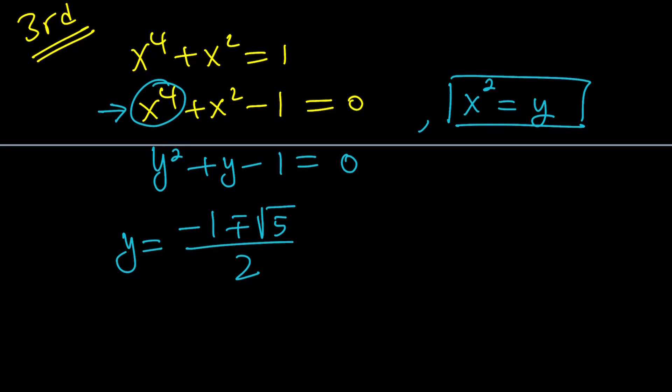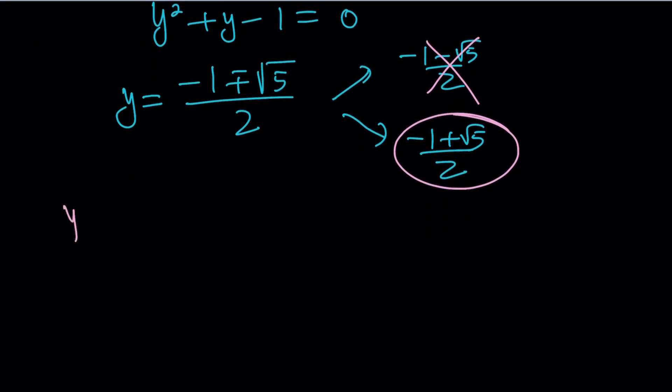And isn't this golden? Think about it. There are two solutions, negative 1 minus root 5 over 2, and negative 1 plus root 5 over 2. Notice that y is equal to x squared. So it's supposed to be a perfect square if x is real, right? So this is not positive. It's negative. It's not going to have real solutions. So we're going to go with this.